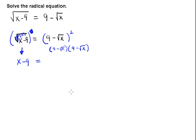But the right hand side is really a FOIL problem. It's the binomial 9 minus the square root of x times itself. This is going to require a full FOIL.